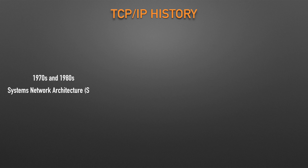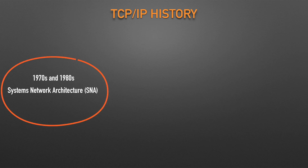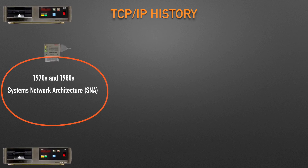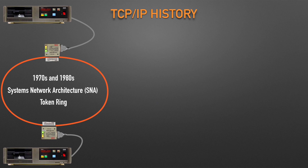The world of computer networking today uses the TCP/IP networking model. IBM, the computer company with the largest market share in many markets back in the 1970s and 1980s, published its Systems Network Architecture, SNA, networking model in 1974. Other vendors also created their own proprietary networking models. As a result, if your company bought computers from three vendors, network engineers often had to create three different networks based on the networking models created by each company, and then somehow connect those networks.